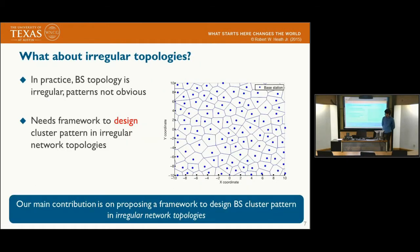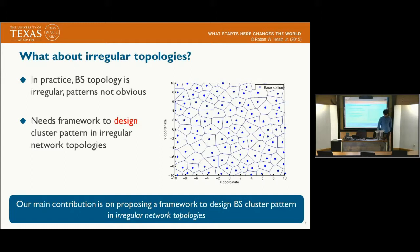But what about irregular network topologies? In practice, the network topology is highly irregular, so the cluster pattern is not as obvious as in the square grid network. We need some framework to design the cluster pattern in irregular network topologies, and now we explore how to do it.